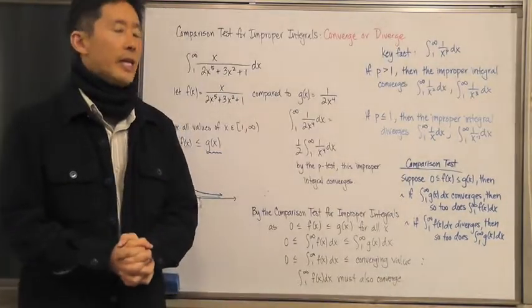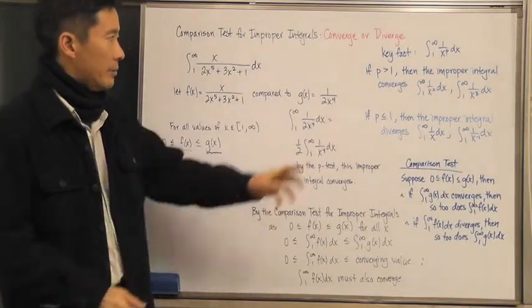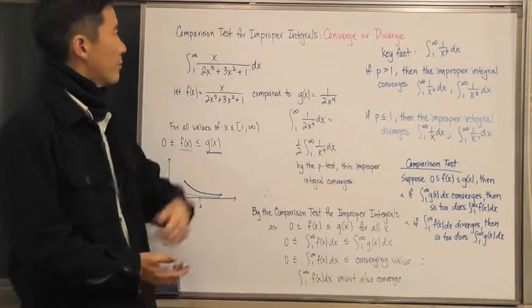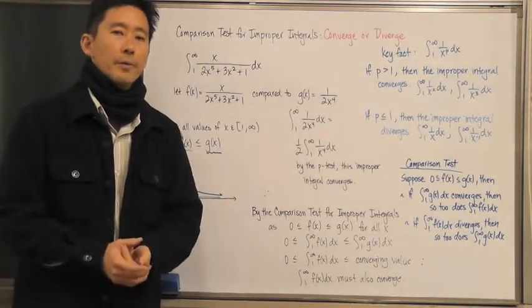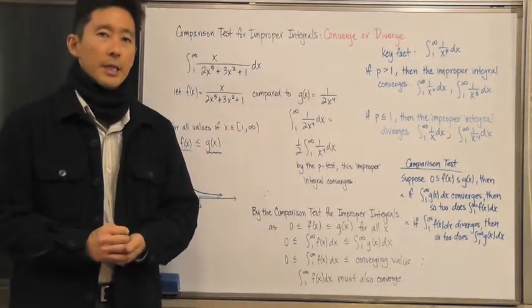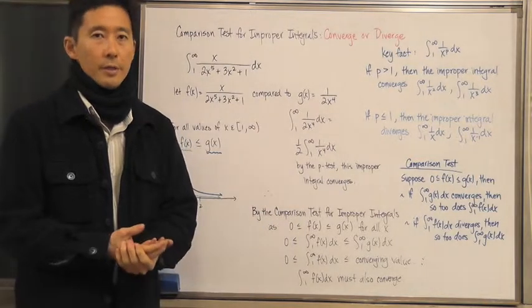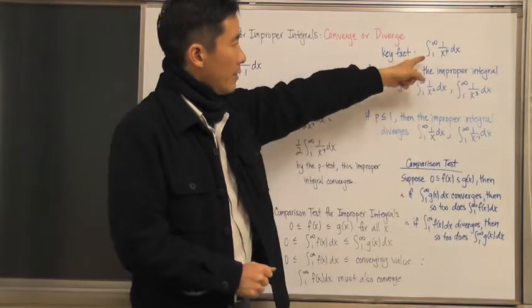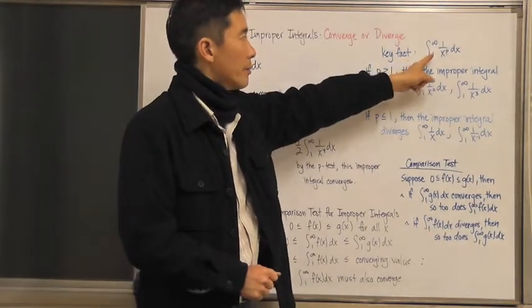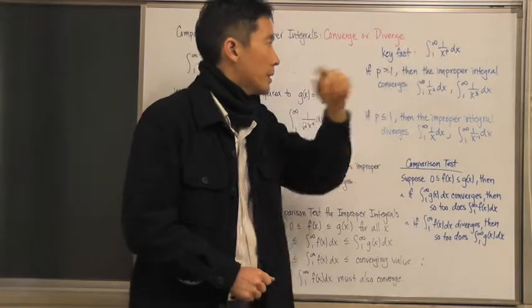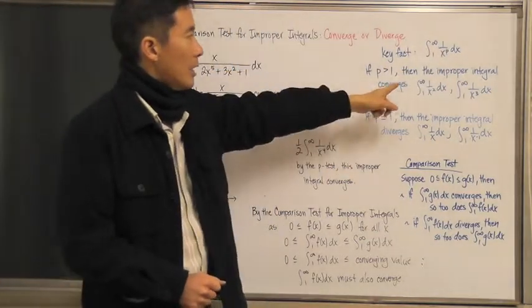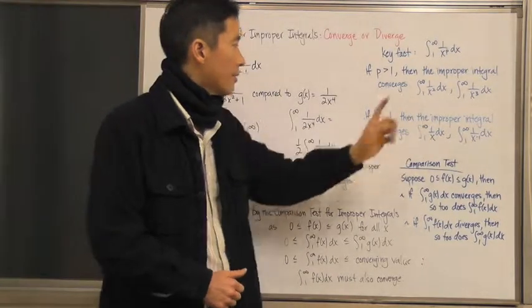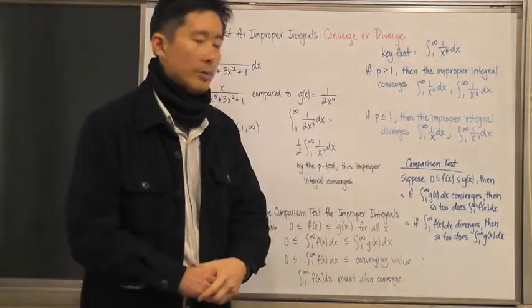Hello everyone. Let's take a look at how we can use this key fact to compare improper integrals with improper integrals to determine whether or not a given improper integral converges or diverges. Remember, if we have the improper integral from 1 to infinity of 1 over x to the p power dx, it converges if p is greater than 1 and diverges if p is less than or equal to 1.